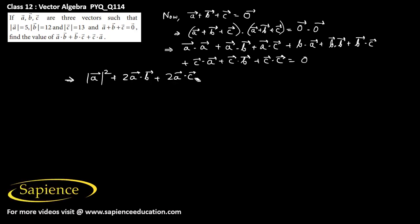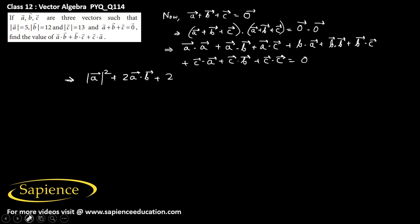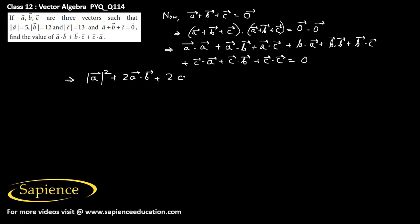Continuing, b·b is |b|², and b·c + c·b = 2(b·c), and c·c is |c|². So we can write: |a|² + |b|² + |c|² + 2(a·b + b·c + c·a) = 0.